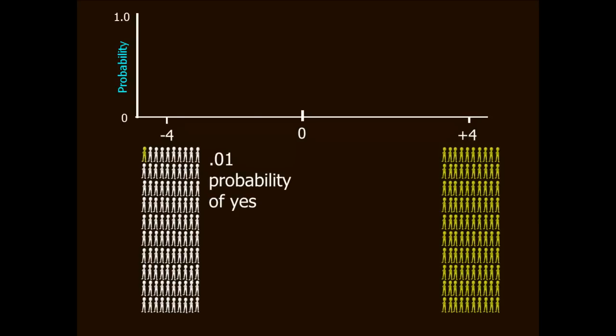When we say there's a .01 probability, what we're really saying is that in a sample of 100 people at that given shoulder level, the odds are that one in 100 would say yes. When we say there's a .99 probability, we're really saying that in a sample of 100 people at that shoulder level, the odds are that 99 out of 100 would say yes.